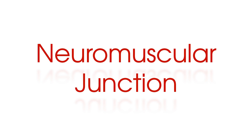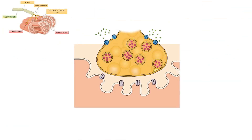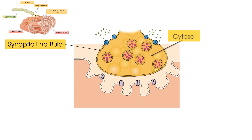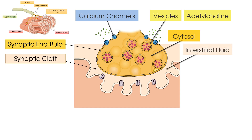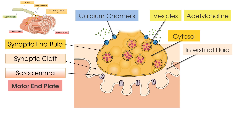Now let's look at the components of the neuromuscular junction. At the top we have the neuron's synaptic end bulb, which contains cytosol and vesicles that contain acetylcholine, and on its borders we have calcium channels. Then we have the synaptic cleft, which contains interstitial fluid. At the bottom we have the muscle fibre's sarcolemma — its cell membrane — which is often referred to as the motor end plate.